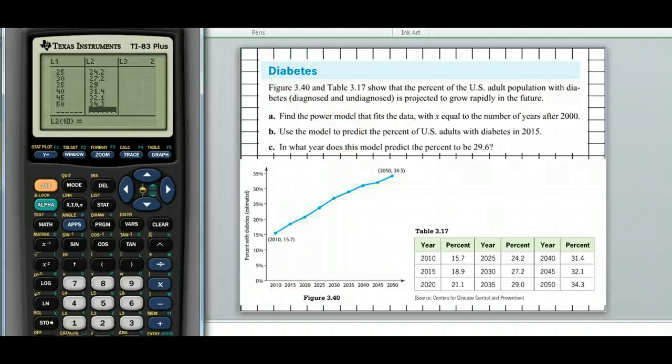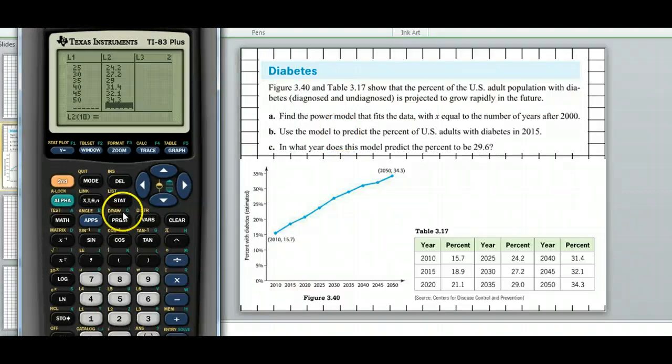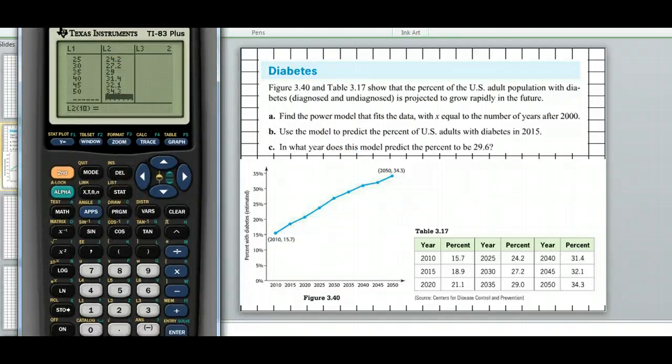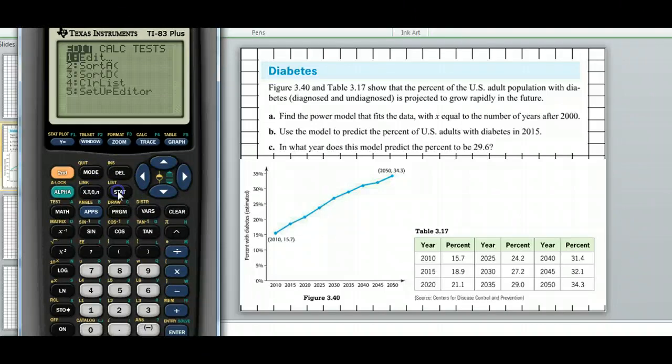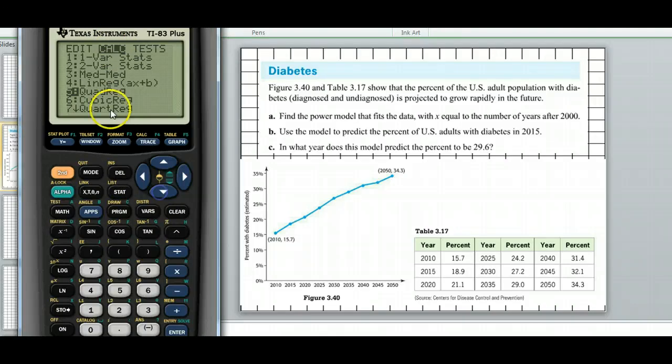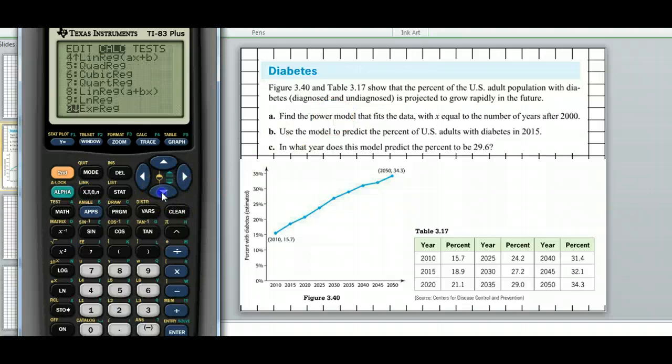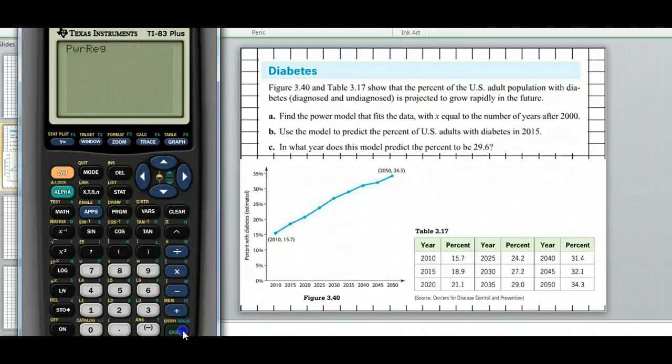So let's find that power model. Once we've got the data in there, we do just like we did with linear regression and quadratic regression. We hit stat, we come over to calc, and then we go down. This is the quadratic regression from before, but we want the power model. So we come all the way down here to power regression, option A. Hit enter. It thinks for a little while, and then here's our function. Now just with most of these, you just round it to two, three decimal places.